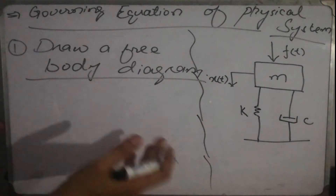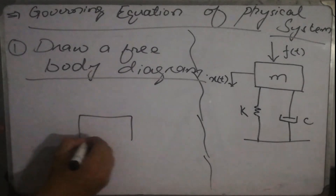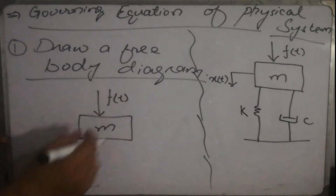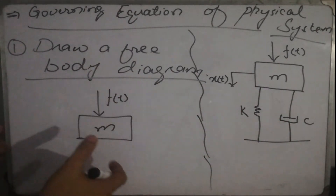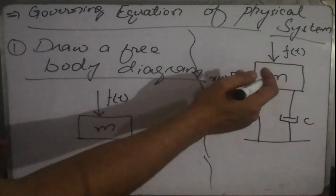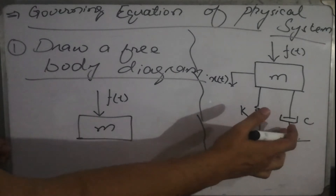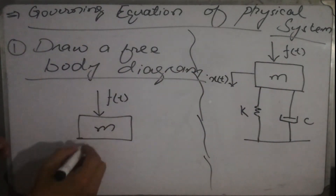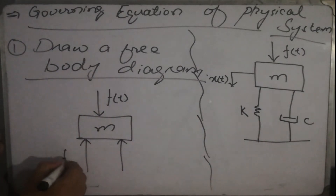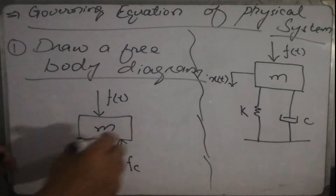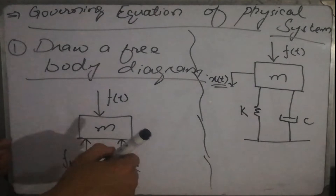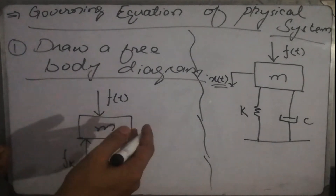The method for the free body diagram is quite simple — we just need to take the quantities we have and show all the forces applied on the mass. The first force is the input force from the top. When the input force is applied, the spring force will be in the upward direction, trying to resist the motion of the mass. The same is true for the damping force. Both will be in the upward direction. We represent the spring force as Fk and the damping force as Fc. This is a single degree of freedom system, meaning motion is resisted in just one direction.